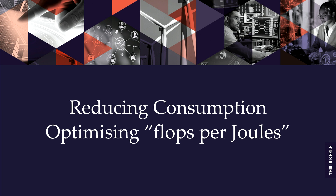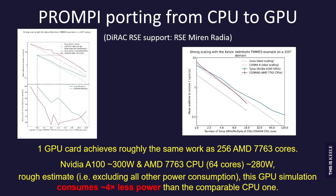Now I'll talk about reducing consumption — or in other words, optimizing flops per joule. I'll start with an example from our own code. My research is about recreating stars on computers and we use Fortran. Fortran is still very efficient — C is as good, but Python, which I'll mention at the end, is much less so. This is our strong scaling result: the time to solution decreases as we increase computing power.